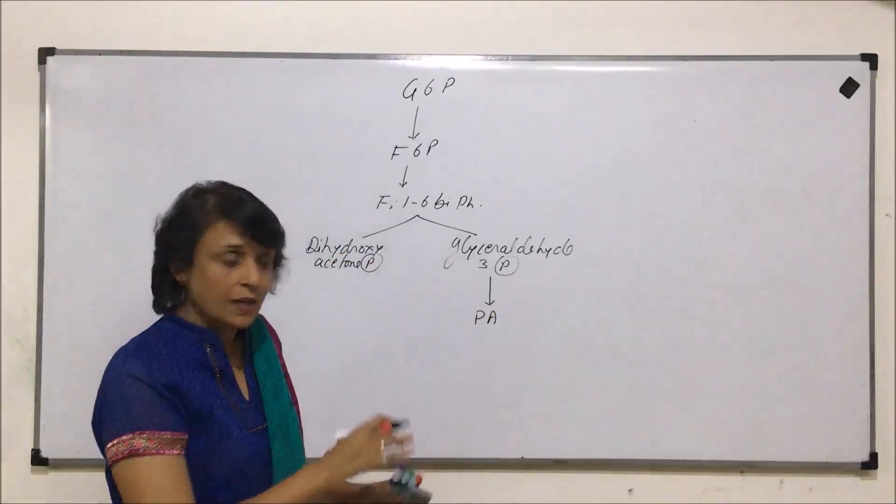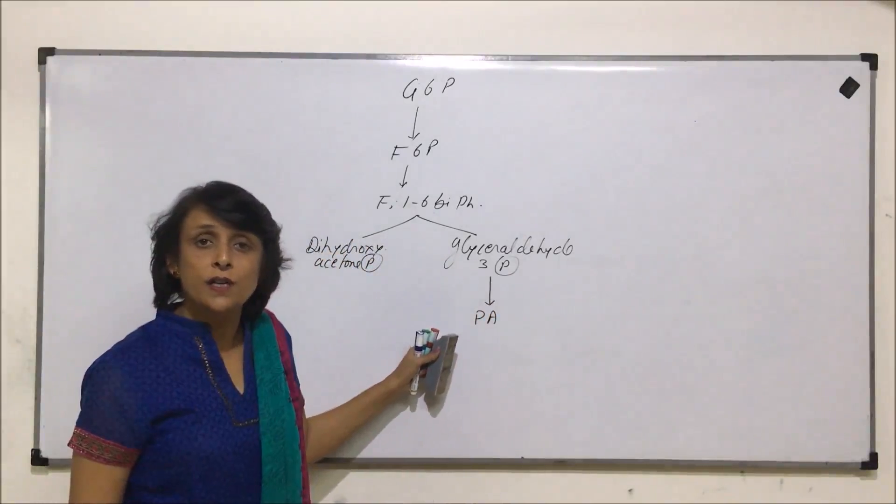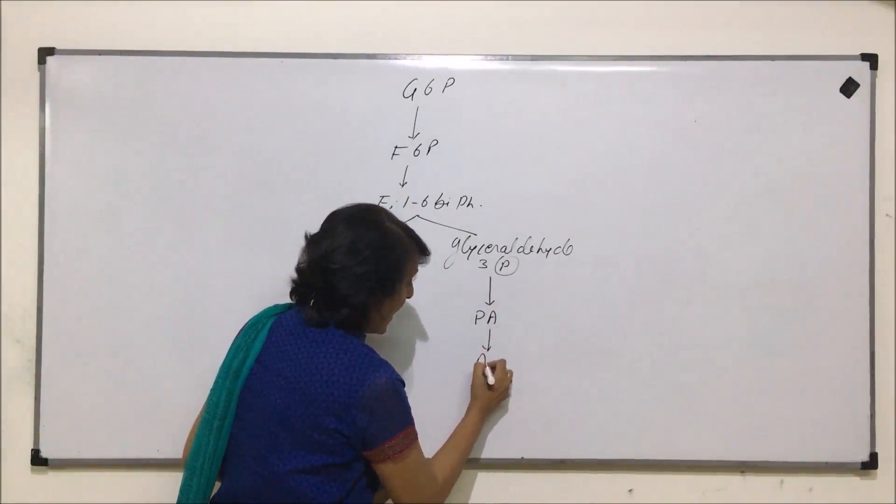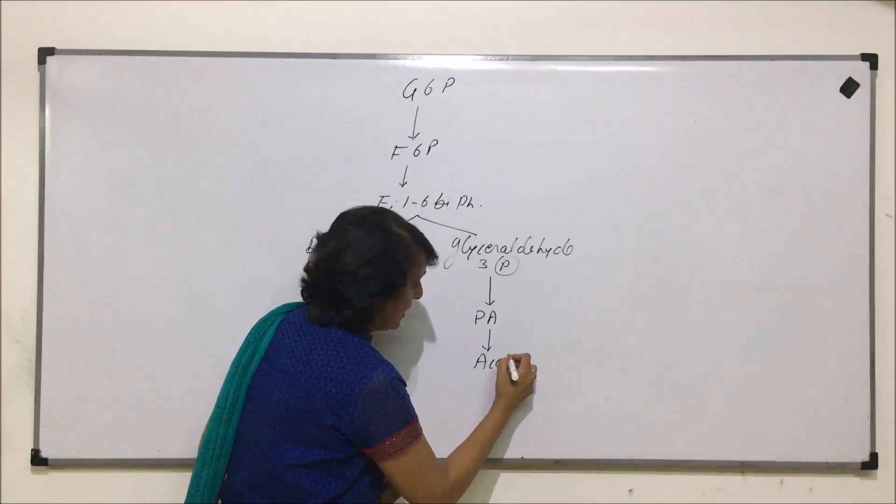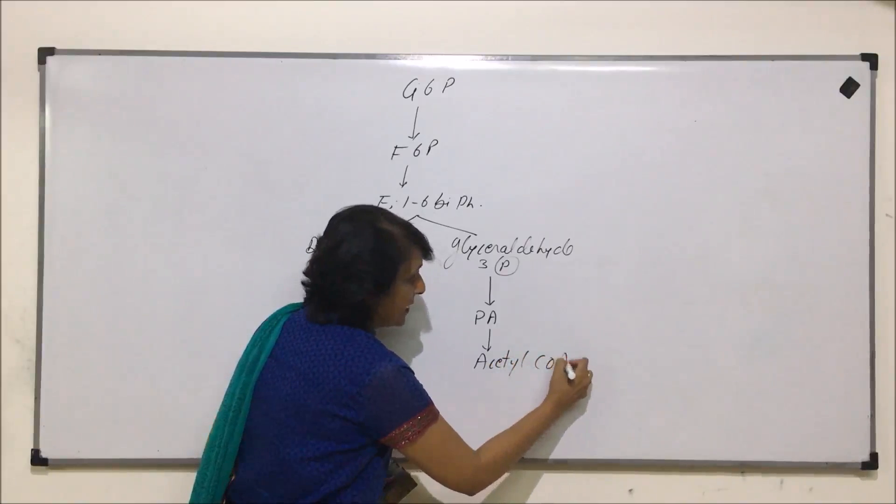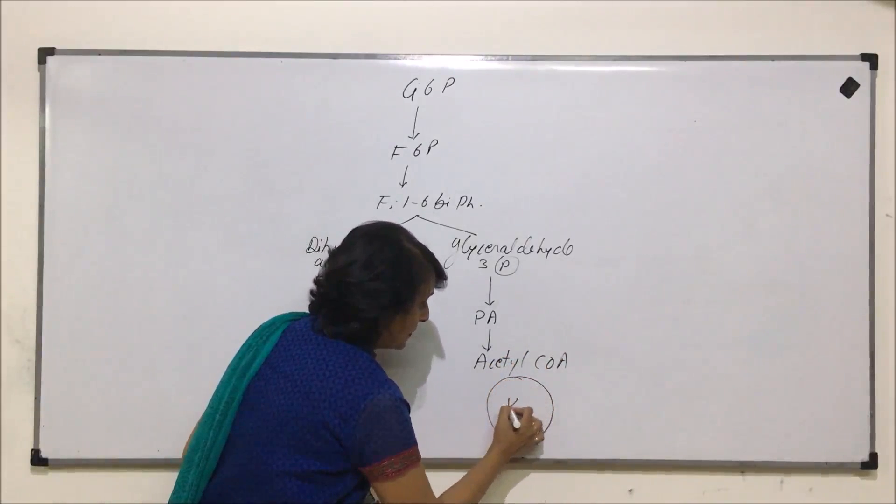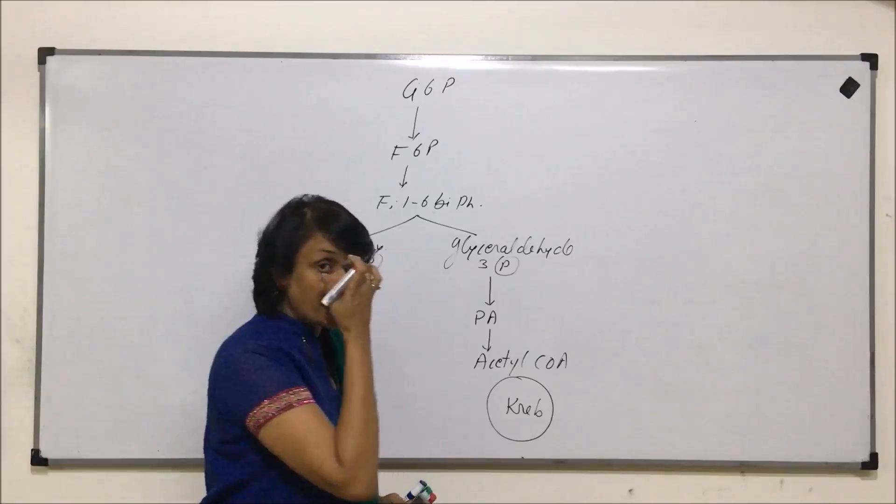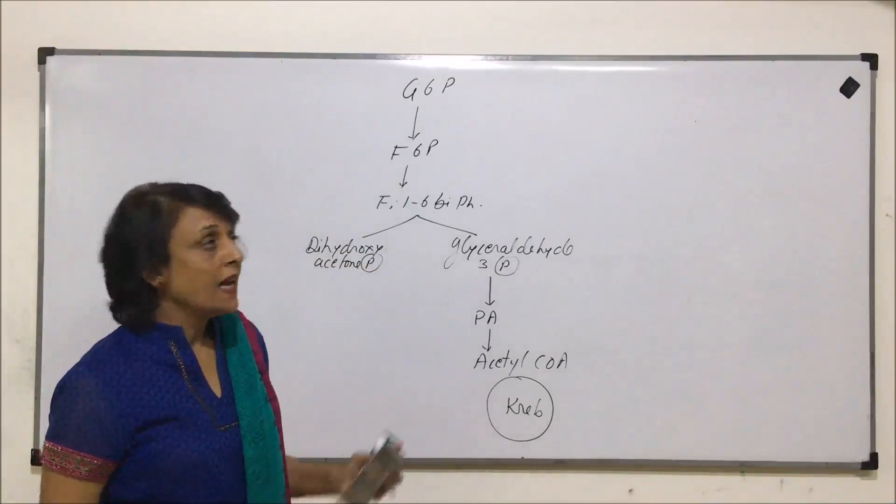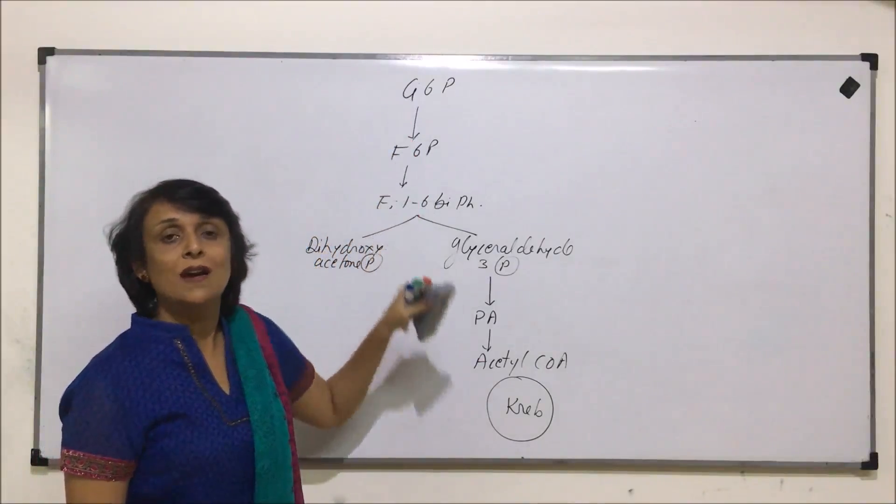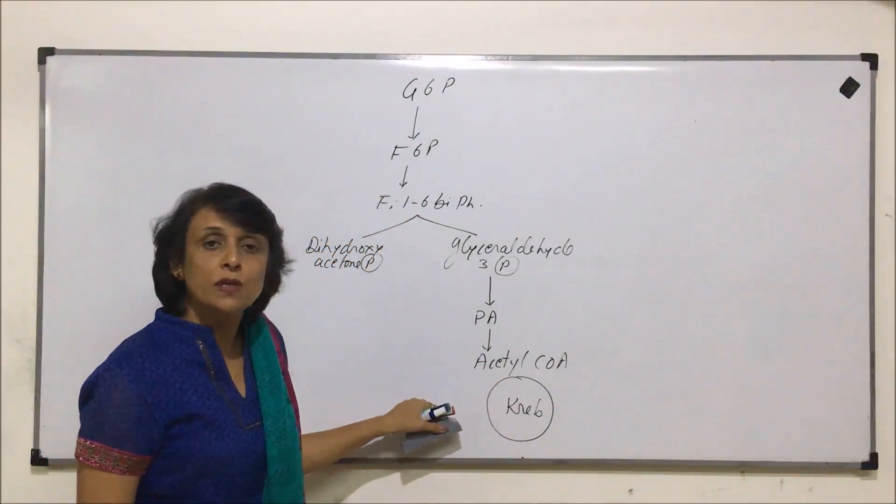Glyceraldehyde 3-phosphate undergoes further changes and finally we get pyruvic acid. We are skipping the intermediate steps and the end product is pyruvic acid. Pyruvic acid changes into acetyl coenzyme A and this acetyl coenzyme A participates in Krebs cycle.